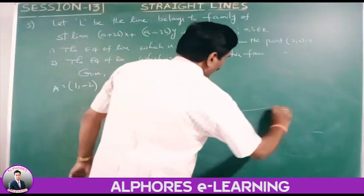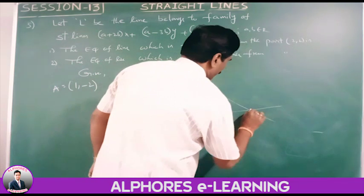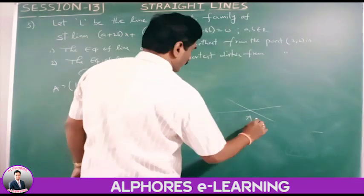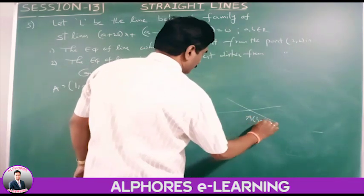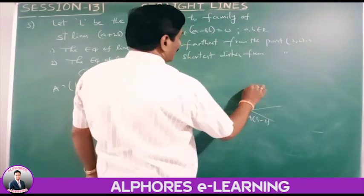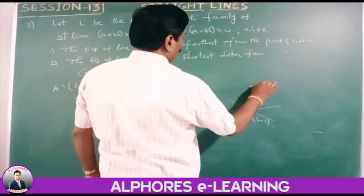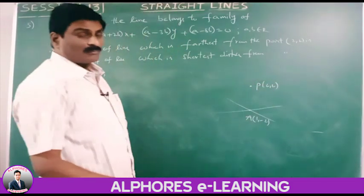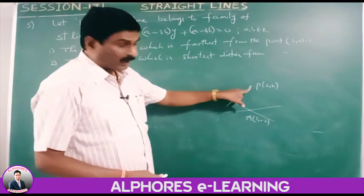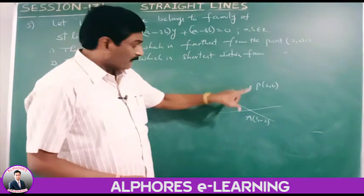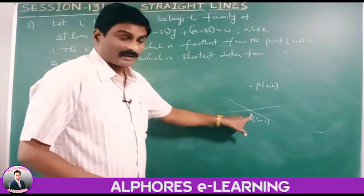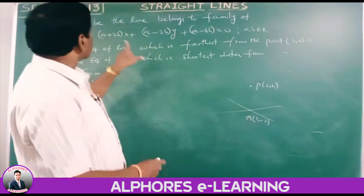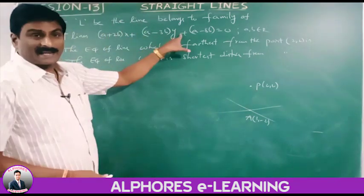All these family of lines pass through the point A(1, minus 2). P is the given point P(2, 2). The required line is the one farthest from P that still passes through A.